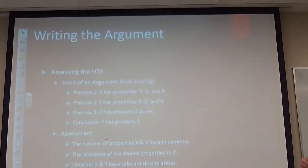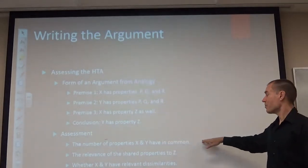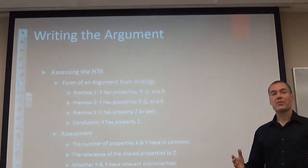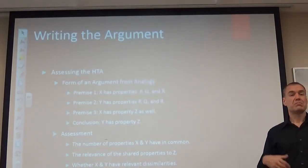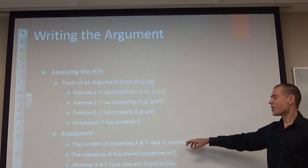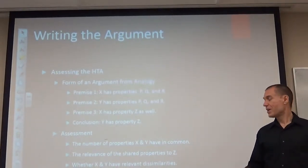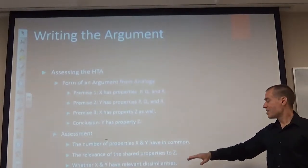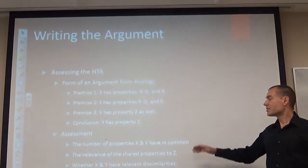A straightforward way to assess the horse trainer analogy: say you'll assess it by the three standards — the number of properties horses and youth have in common, the relevance of those qualities, and whether there are relevant dissimilarities. Then address each: yes or no, and why. If the answer is not enough properties, not relevant enough, too many relevant dissimilarities, the analogy is weak — bad argument. If there's enough in common, they're relevant, and dissimilarities don't break it, it's a strong argument by analogy.